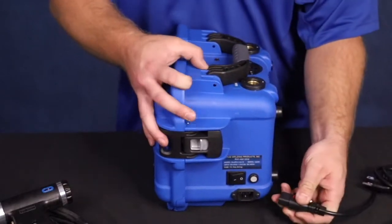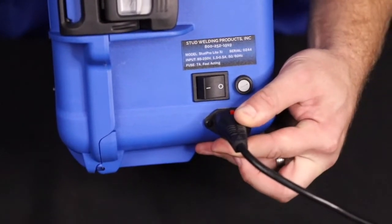Insert the AC cord into the AC cord socket. Note the on-off switch and circuit breaker locations.